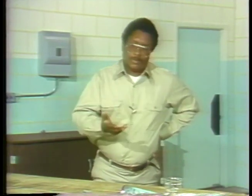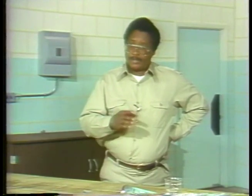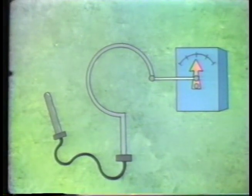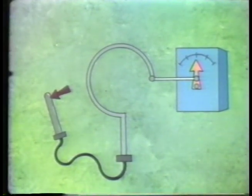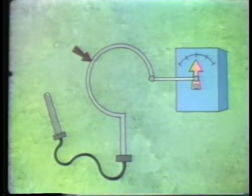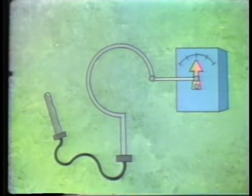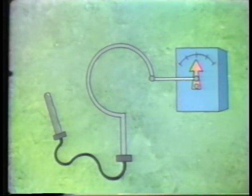While both liquid-filled and bimetallic thermometers are very useful and accurate, there are other methods you should be aware of. One common alternative is a filled thermal system. A typical filled thermal system consists of a sensing element, capillary tubing, a pressure measuring device (in this case a Bourdon tube), a scale, and a pointer. The sensing bulb, the capillary tube, and the Bourdon tube are all filled with a fluid such as alcohol or a gas. Filled thermal systems work on the principle that any change in temperature will cause a corresponding change in the pressure exerted by the fluid.